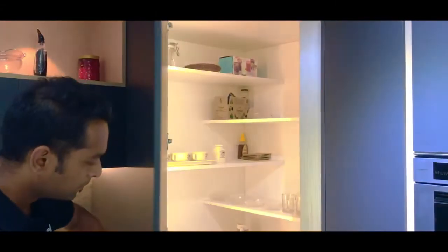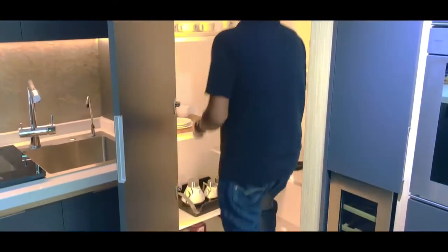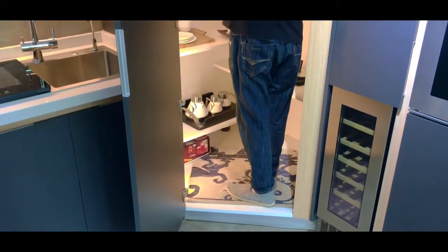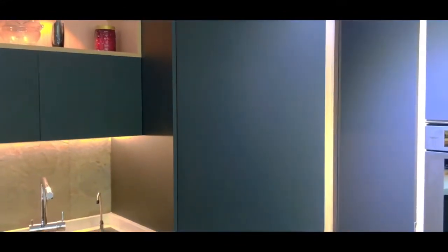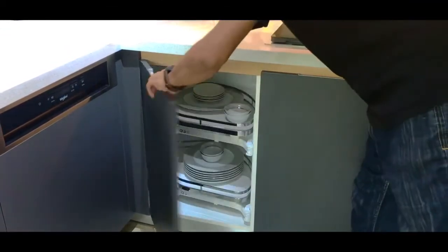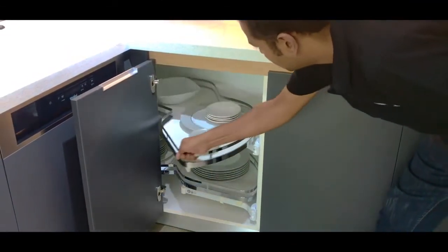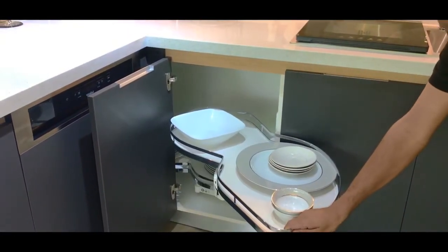The u-shaped kitchen features a 45 degree corner unit with alternating shelves which is also a great way to utilize the corner space. On the second corner of the u-shaped kitchen we have a chrome finished Lehman's Corner Unit which helps with accessing the corner spaces easily.